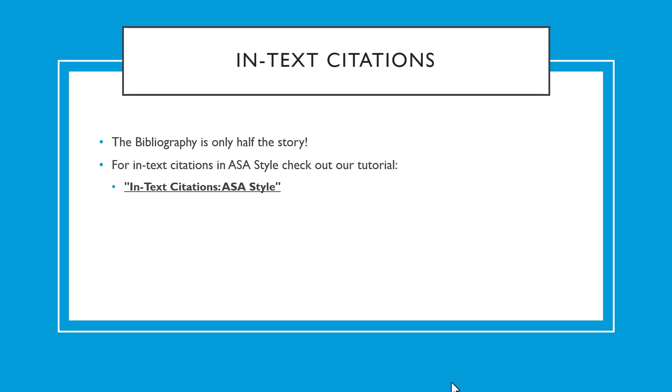That takes care of the bibliographic citation, but the bibliographic citation is only one half of a complete ASA citation. Every ASA citation has two parts: the bibliographic citation and the in-text citation. The bibliographic citation helps your reader know what article you got the information from, but doesn't tell the reader what part of your work was taken from that article, nor where in the article you got that idea or quote. To learn more about in-text citations, check out our tutorial on in-text citations, ASA style.